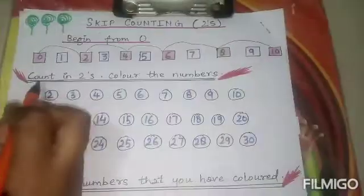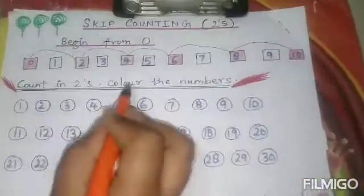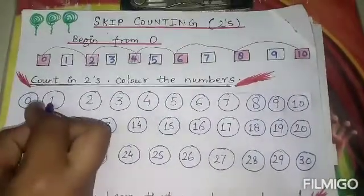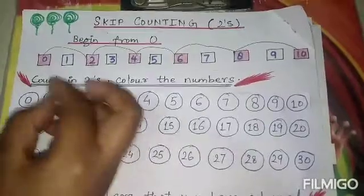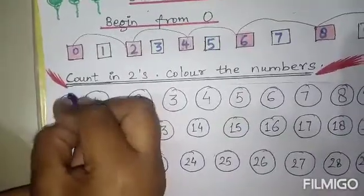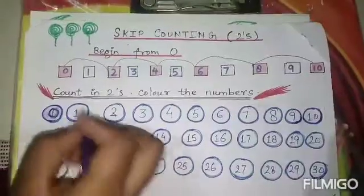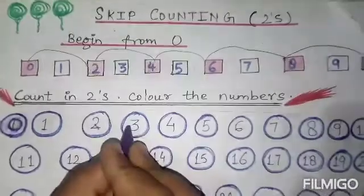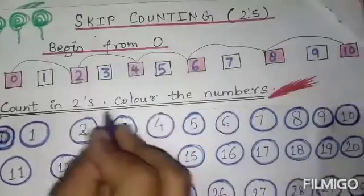Skip Count in 2s. Color the numbers. Start from 0. First ball skip, second ball jump. One ball skip, second ball jump. One ball skip, second ball jump.